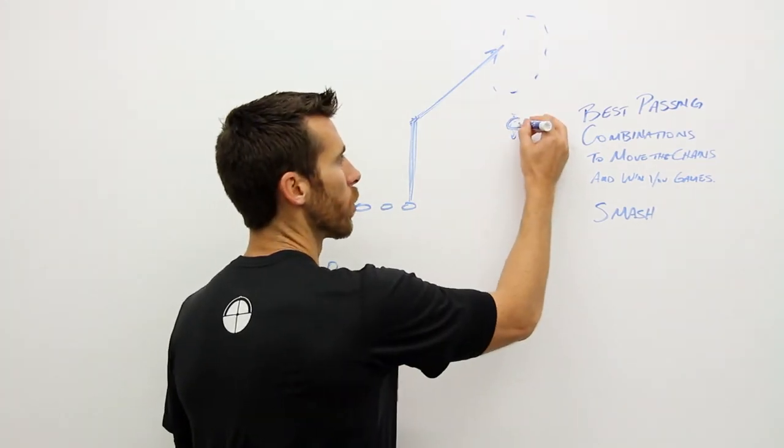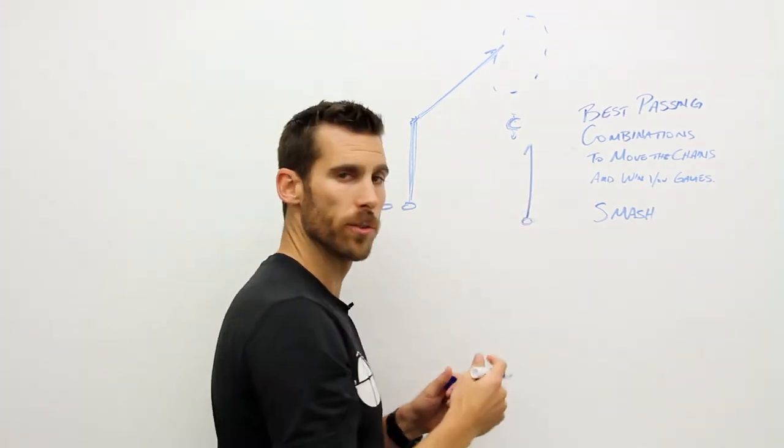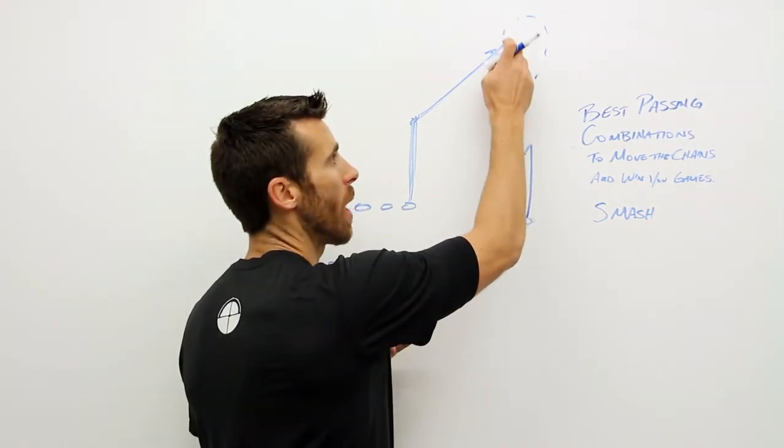So when we make our read and we're reading this corner, if his hips are square—meaning he's facing the line of scrimmage or he's facing this number one receiver—if his hips are square, then our route is there.